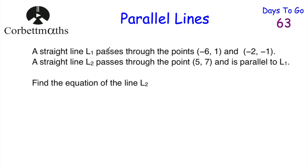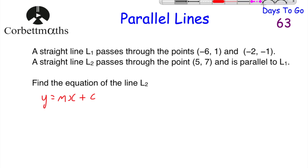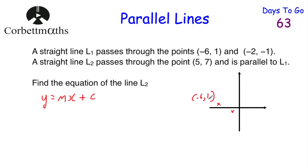This question is a little different. We're told line L1 passes through the points (−6, 1) and (−2, −1), and line L2 passes through the point (5, 7) and is parallel to L1. Find the equation of L2. We need to find the gradient of L1 first. Let's sketch the line — (−6, 1) is up to the left, and (−2, −1) is down to the right. Since L2 is parallel to L1, their gradients will be equal.